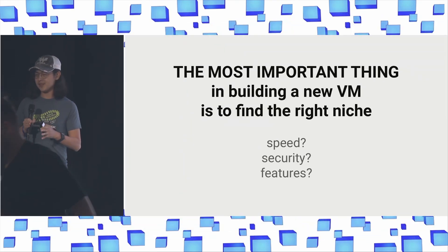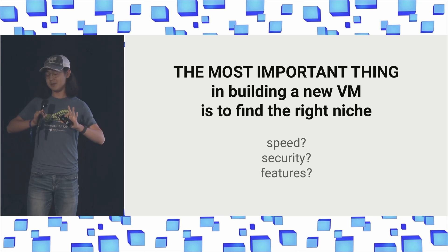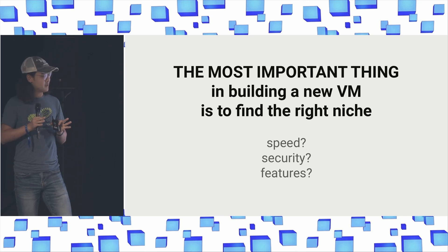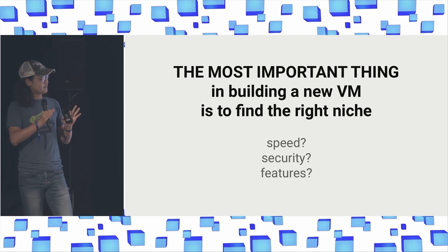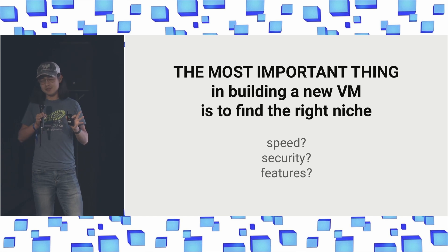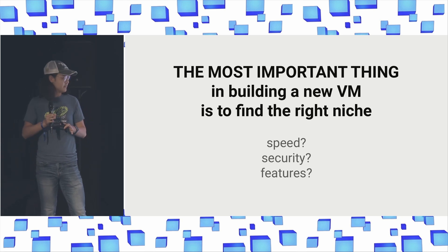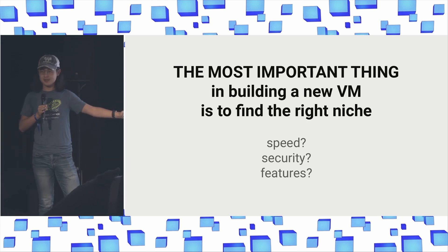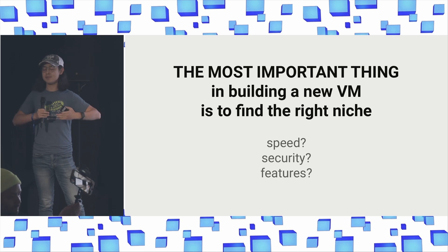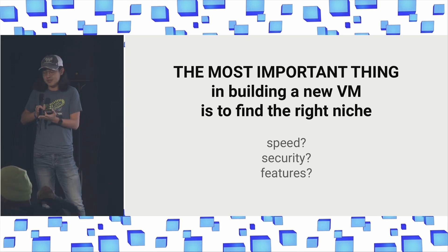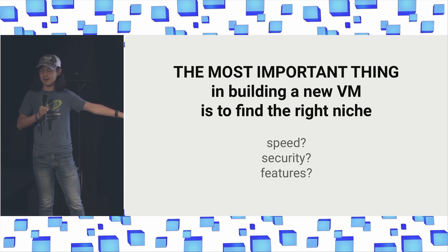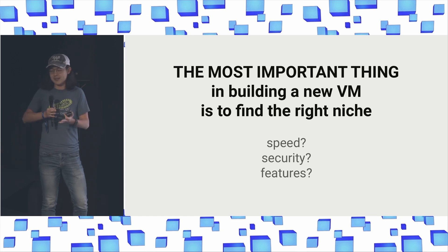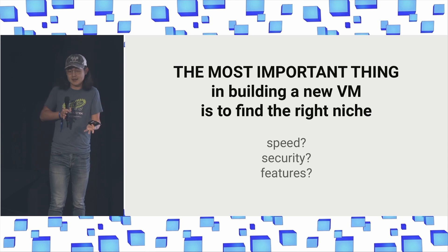Before we jump into Grac, I want to give some general thoughts on what it's like to build an execution layer in today's market. There are three aspects you can look at when evaluating an execution environment: speed — meaning how many TPS you can do; security — meaning how many security pitfalls your developers can fall into; and features — meaning how big a toolkit you're providing to developers to build their apps.